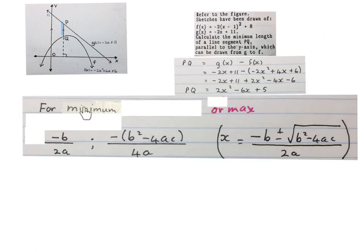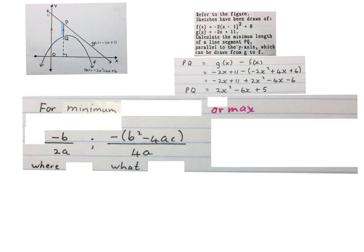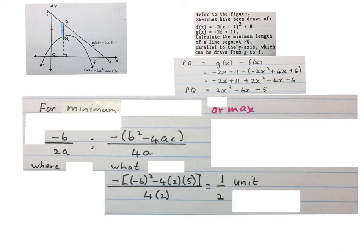And like I said, for the minimum or maximum, we're going to use these two formulas. I told you we can derive them sort of from here. Like I said, we use this part of the formula for where we will find the minimum. We use this part of the formula to find what the minimum length will be. So we take our values from the expression of PQ: a is 2, b is -6, and c is +5. Plug it into this formula, simplify it with my calculator, and my final answer is 0.5 unit. It is the minimum length of that blue line. Stop the video and get your brain around this.